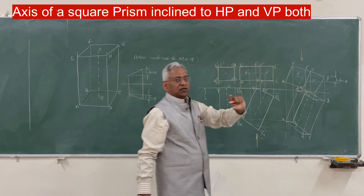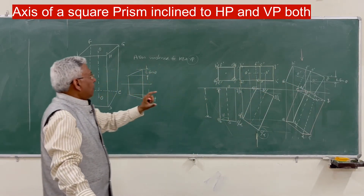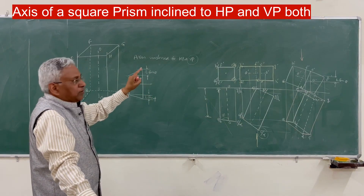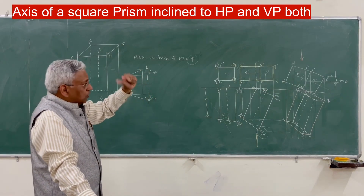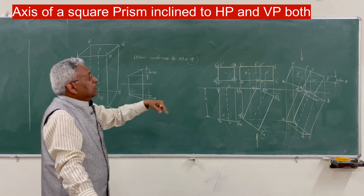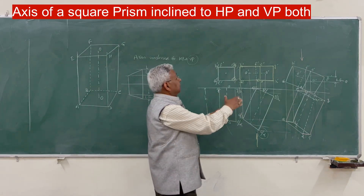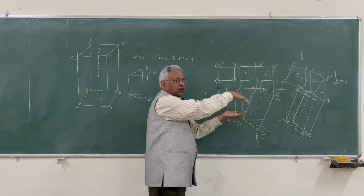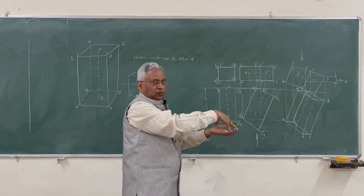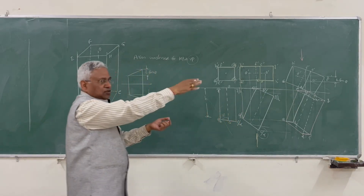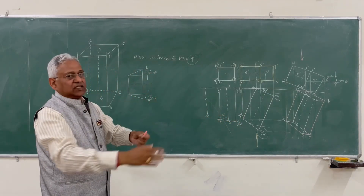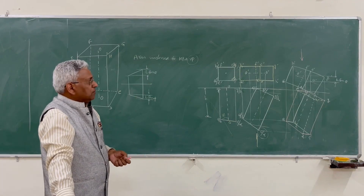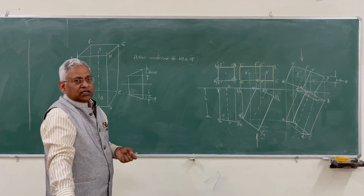That is how we draw the projection of a solid when the axis is inclined to both HP and VP. You can also do it the other way — rather than placing the solid in the vertical plane first, you can place it in the horizontal plane first, then satisfy the condition for theta and then phi. Thank you very much for watching this video. I hope you understood it.